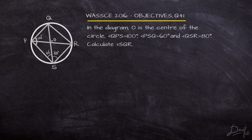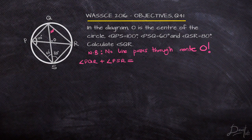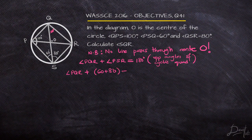Another question in the same year, question number 41 — we are given a cyclic quadrilateral. One of the things to understand first is that there is no line passing through the center of the circle; if there were, the angle at the circumference would be 90 degrees. But that is not the case here. We know that PQR and PSR are opposite angles of the cyclic quadrilateral, so they add up to 180 degrees. PSR is comprised of two angles, 60 and 80 degrees, so angle PQR works out to be 40 degrees.